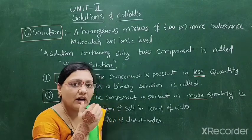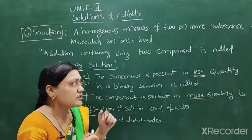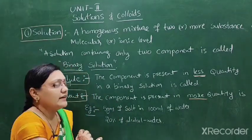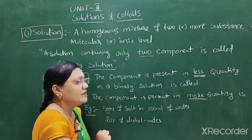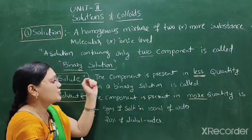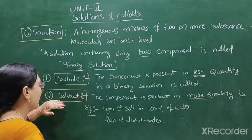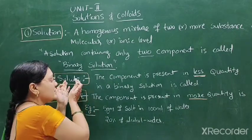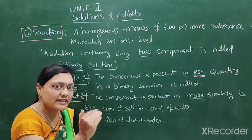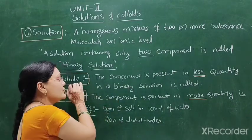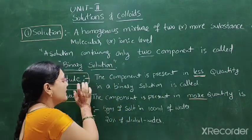A solution containing only two components is called a binary solution. The two components are called solute and solvent. The solute is the component present in lesser quantity in a binary solution.